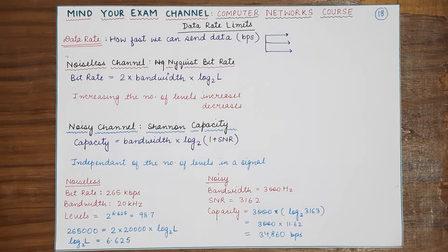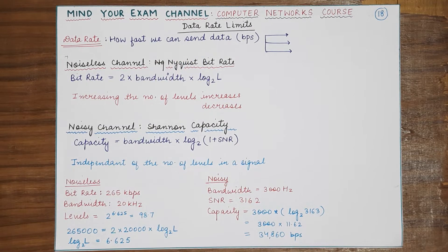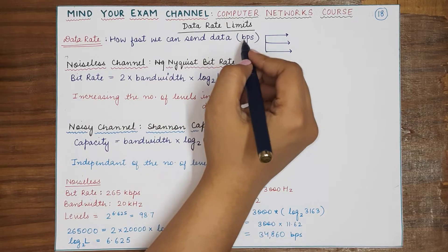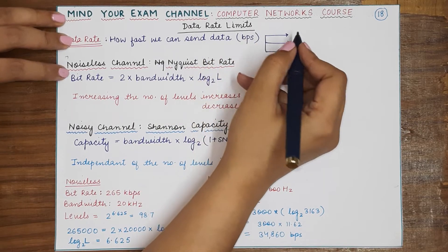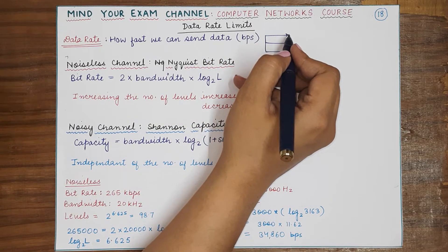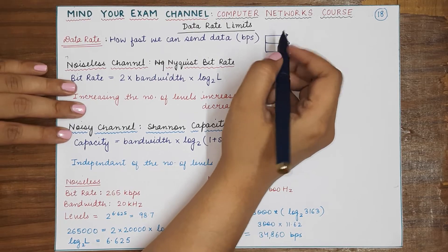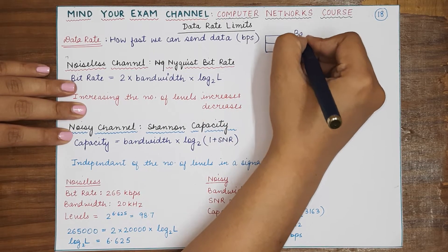Data rate, which is defined in bits per second, is dependent upon three factors. Firstly, the bandwidth.